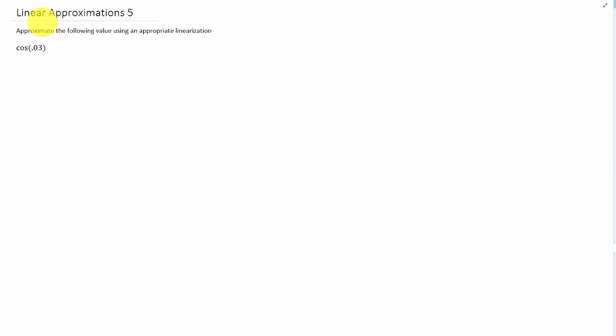Let's now approximate cosine of 0.03 using an appropriate linearization. So the first thing when we're doing problems like this that we need to do is we need to figure out what function is appropriate and what a value is appropriate.